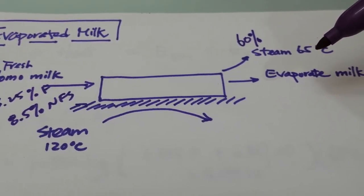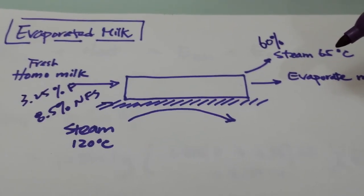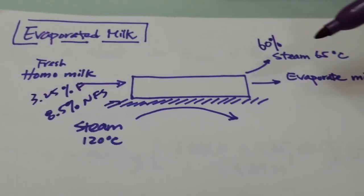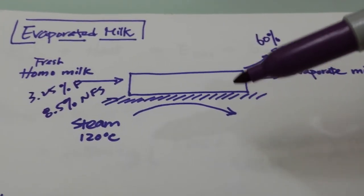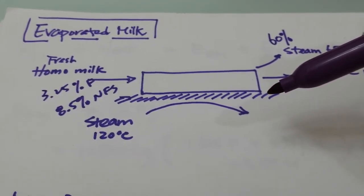We don't want the temperature to be too high because it may alter the taste of the milk. So the milk is going to boil at 65 degrees Celsius.